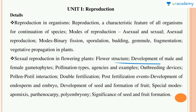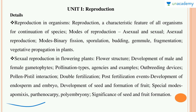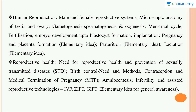Then pollination types and outbreeding devices, double fertilization — very important — development of seed and formation of fruit. Terms like apomixis and polyembryony are very important as questions come from these. Then the human reproductive system covers both the male and female reproductive systems.